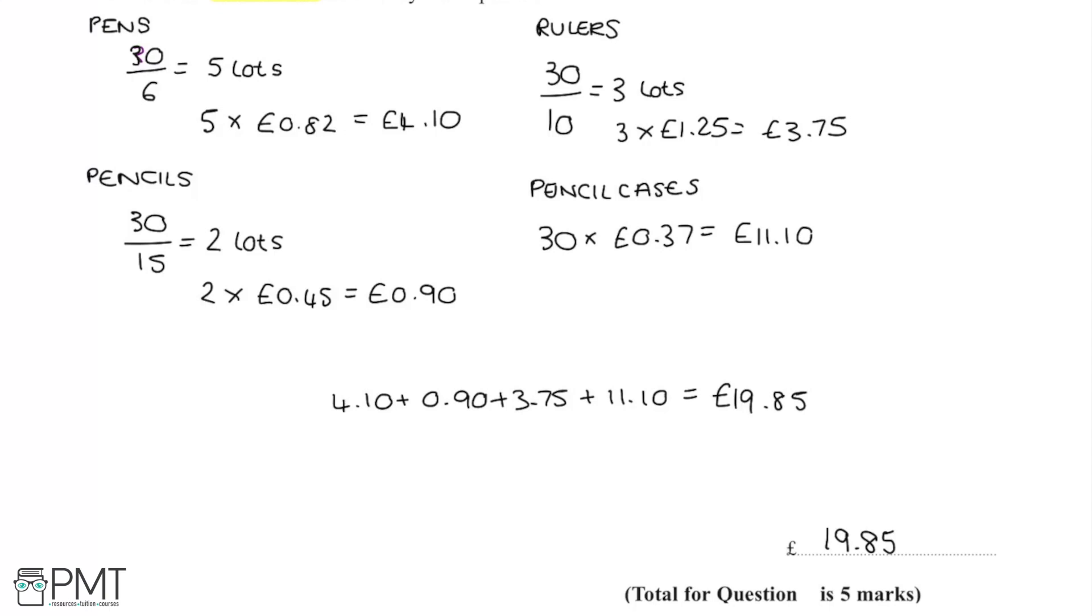So now for how the marks were awarded here. The first mark would be for starting the process. So for example, doing this 30 divided by 6 to gain an answer of 5 lots, that would gain me the first mark here. Then the second mark would be for using this, following it through and finding the cost of 30 pens or pencils or rulers, either of these work.